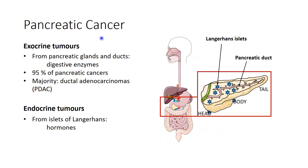They can be divided into the prevalent group of exocrine tumors that arise from cells that produce the digestive enzymes. The most common subtype are the pancreatic ductal adenocarcinomas, short PDAC. On the other hand, we have the rather rare endocrine tumors that arise from cells that produce the hormones.